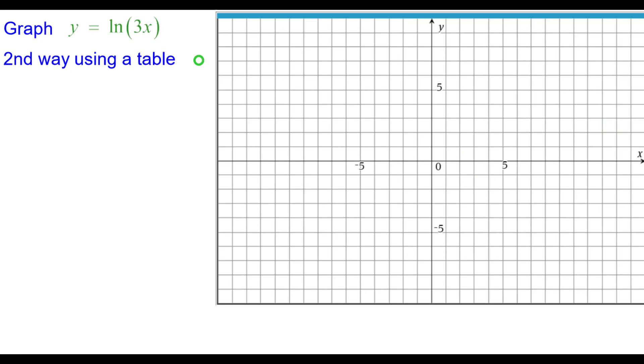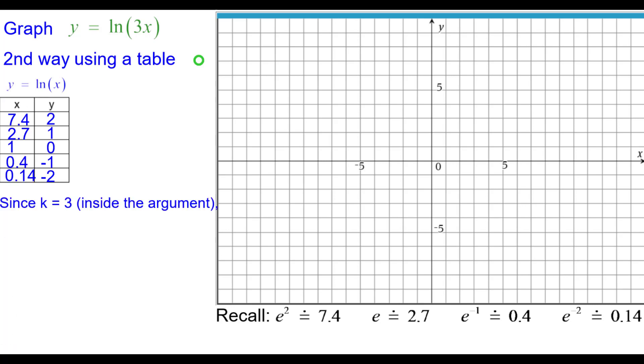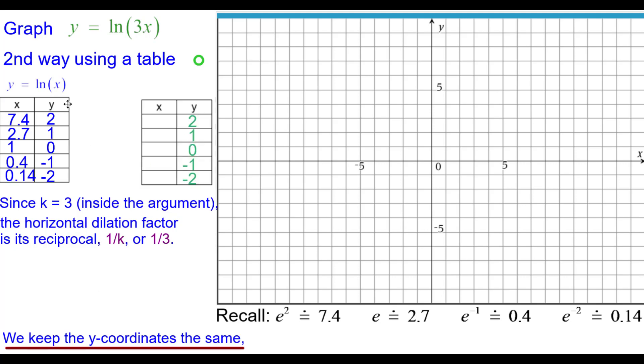Second way using a table. This is our natural log table, the reverse of the e to the x table. We interchange x and y. Since k equals 3 inside the argument of the function, the horizontal dilation factor is its reciprocal which is one third. So we keep the y coordinates the same but we multiply each x coordinate by the reciprocal of 3 which is one third.